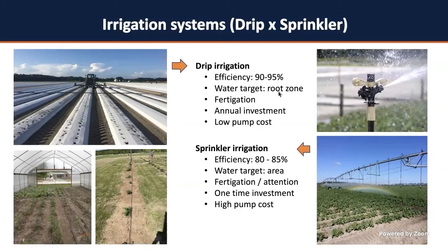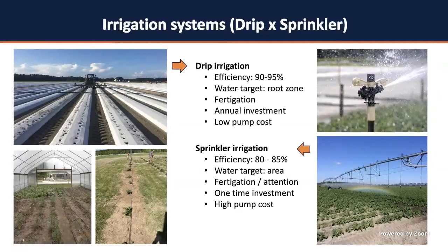Most sprinkler irrigation can use stationary sprinklers installed in the field, or a center pivot or linear movement system that travels through the field applying water uniformly. For drip irrigation, you can install it in bare ground, high tunnels, or open field — but ideally in a plastic mulching system, because the plastic mulch minimizes water loss by evaporation from the soil. The drip irrigation system is the most recommended for vegetables, but sprinkler can also be the best option in some cases.